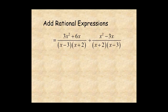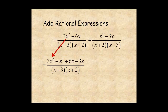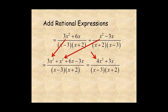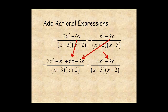Then add the numerators. 3x squared plus x squared is 4x squared, and 6x minus 3x is 3x. And the final answer is 4x squared plus 3x over x minus 3 times x plus 2.